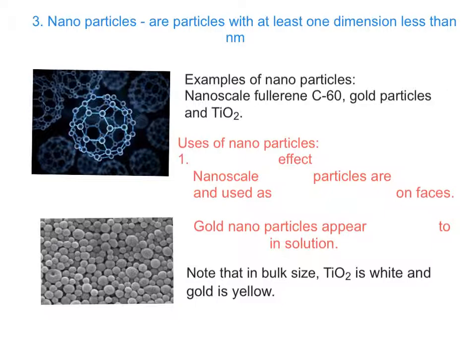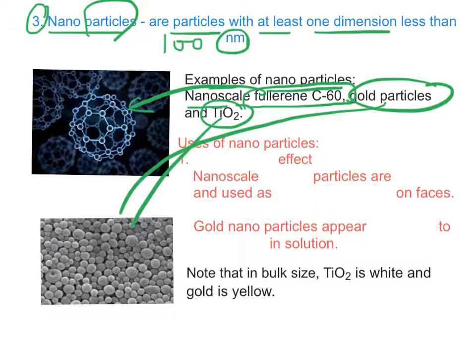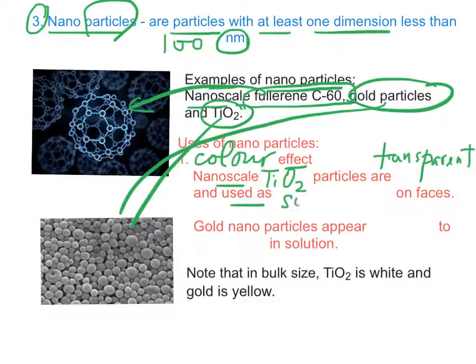The last form is nanoparticles. Nanoparticles are particles with at least one dimension less than 100 nanometers. Examples of nanoparticles are nanoscale fluorescent C-60, gold particles and titanium oxides. Uses of nanoparticles is due to its color effects. Nanoscale titanium oxides are transparent and used as sunscreen on human faces.